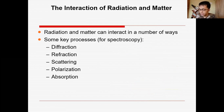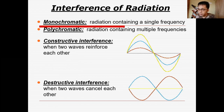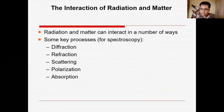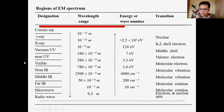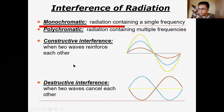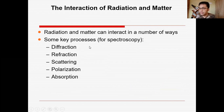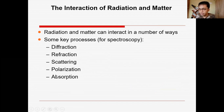Now, the interaction of radiation with matter — what happens? Each electromagnetic spectrum region comprises waves with their own corresponding wavelengths. When light interacts with a specific molecule, several key processes occur in spectroscopy: diffraction, refraction, scattering, polarization, and absorption.